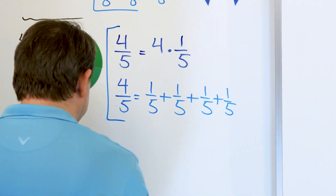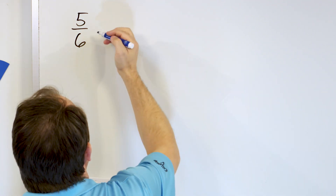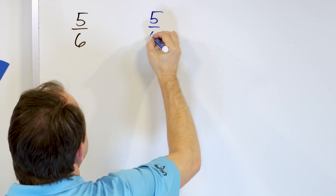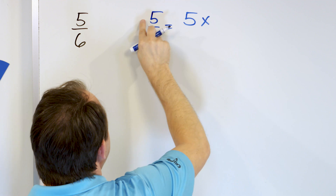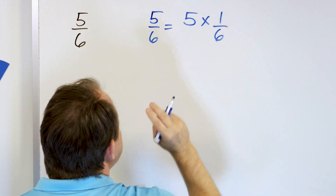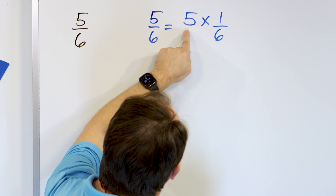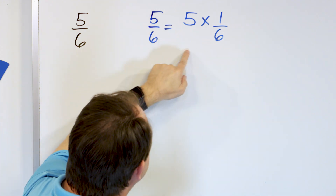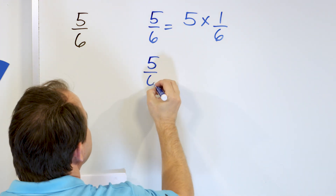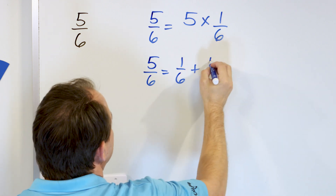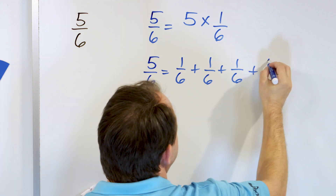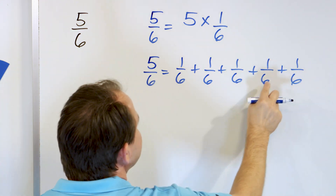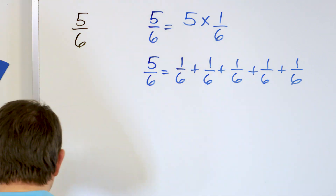Let's take a look at problem number three. What about the fraction 5/6ths? How do we write that as multiplication and as addition? 5/6ths can be written as 5 times the fraction 1/6th. If you think of 5 as 5 over 1, then 5 times 1 is 5, and 1 times 6 is 6. So this equation is true. We can also write that 5/6ths equals 1/6th plus 1/6th plus 1/6th plus 1/6th plus 1/6th — 5 times.